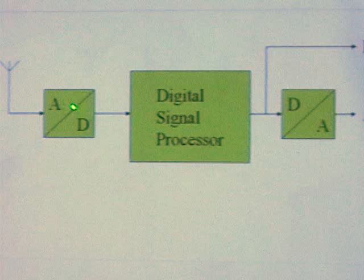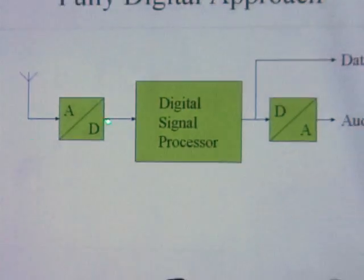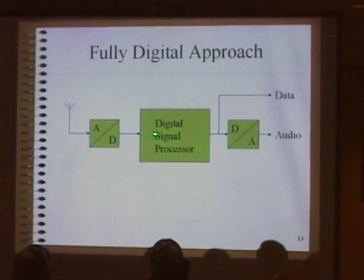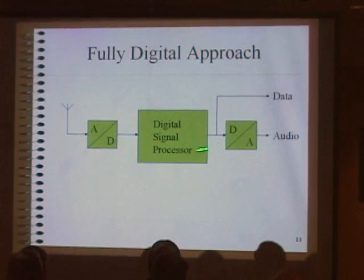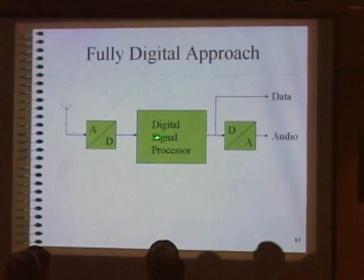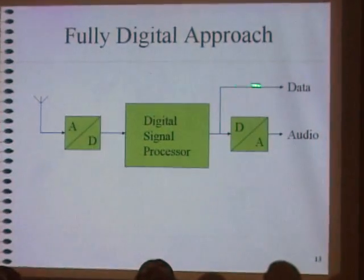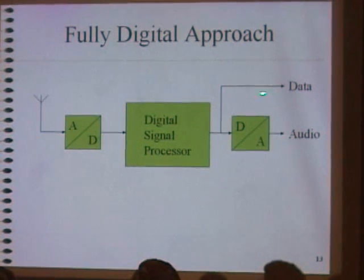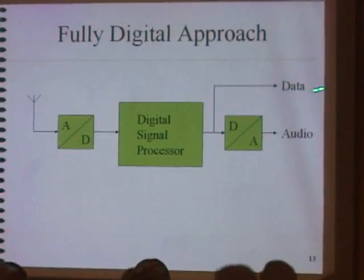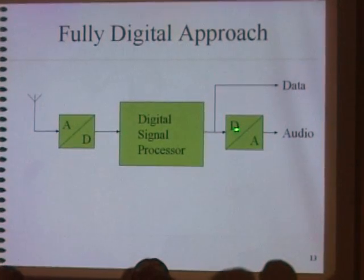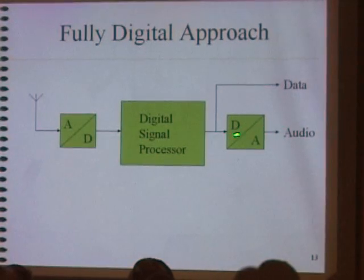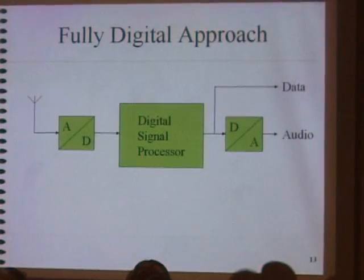You take your antenna and connect it directly to your analog-to-digital converter, then put the output into a digital signal processor. If it's a digital mode like PSK31 or RTTY, that's as far as you need to go. If it's a sideband or CW or other mode that you want to listen to, you put it back through a digital-to-analog converter.